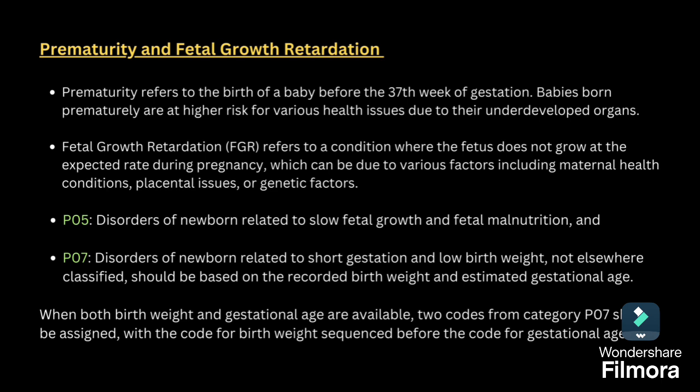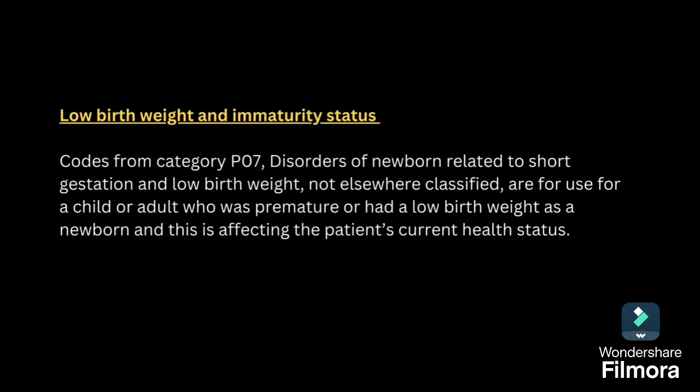Next is prematurity and fetal growth retardation. Prematurity refers to the birth of the baby before 37 weeks of gestation. Babies born premature are at higher risk of various health issues. Fetal growth retardation refers to a condition where the fetus does not grow at the expected rate during pregnancy. For fetal growth and fetal malnutrition, we will code P05. For prematurity and low birth weight and immaturity status, we will code P07 — disorders of newborn related to short gestation and low birth weight.